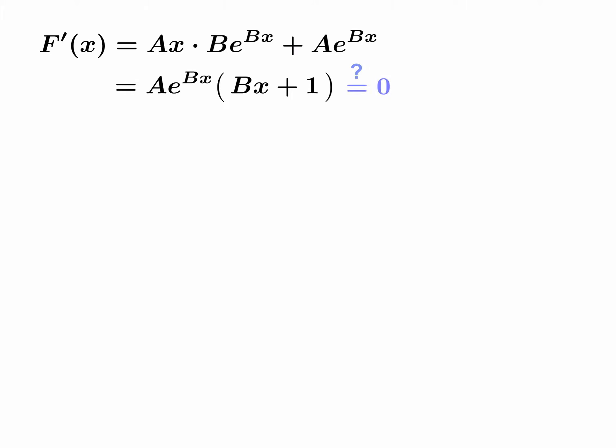Now we need to find the critical numbers. This formula is defined for all values of x, so the only way we can get a critical number is if the derivative has zero for a value. There's really only one way to get that: A is a constant, e^(Bx) is always positive, so the only way we can get zero is if x is negative one over B. That's our only critical number.